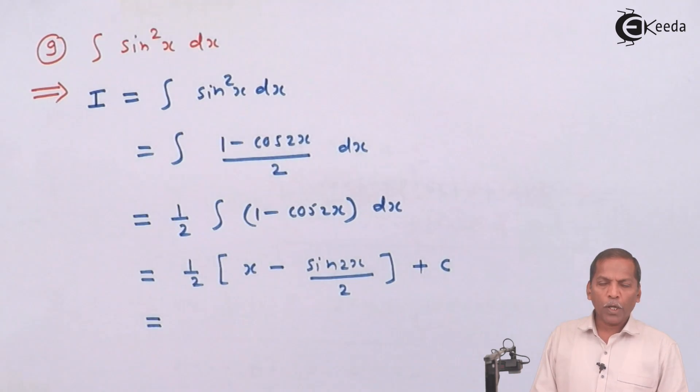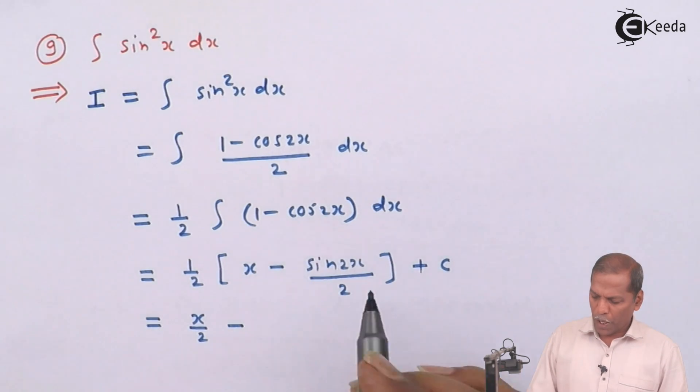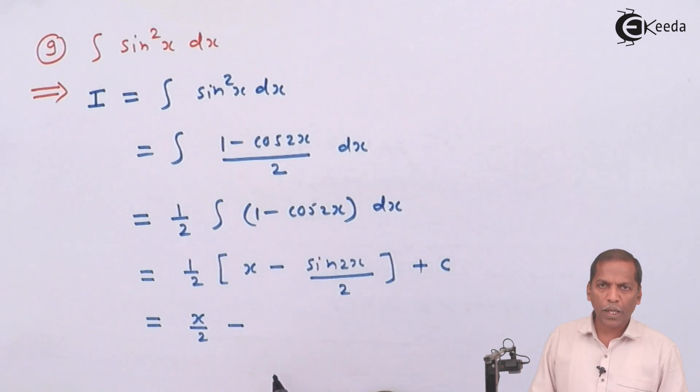Now this bracket we have to multiply with 1 by 2. So on simplifying we get 1 by 2 into x gives x upon 2 minus 1 by 2 into sin of 2x upon 2, so that gives sin of 2x upon 4 plus c.